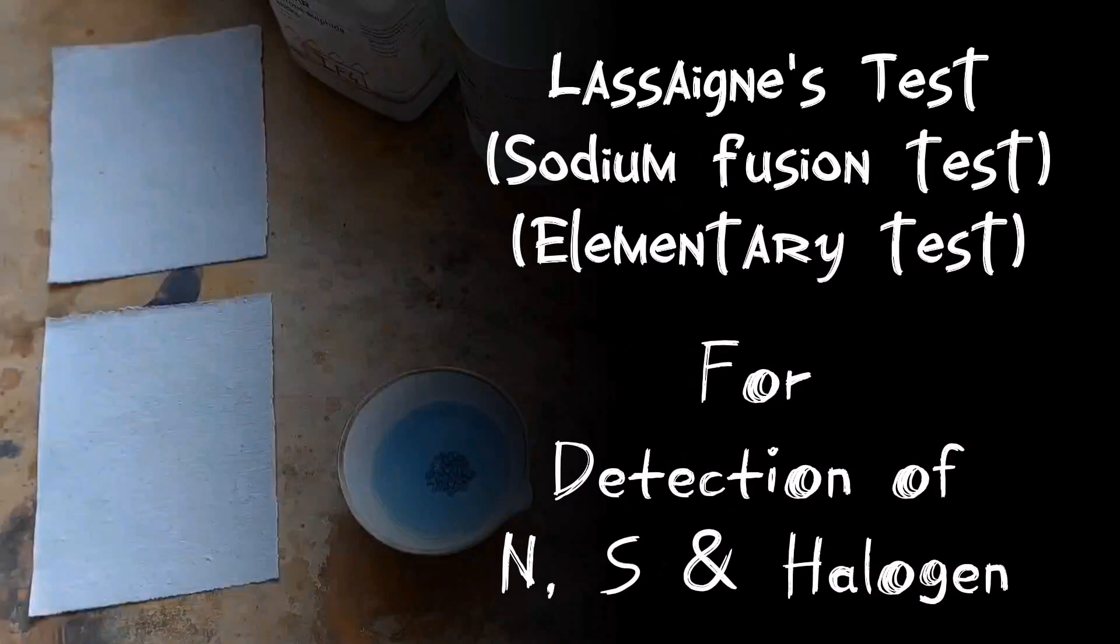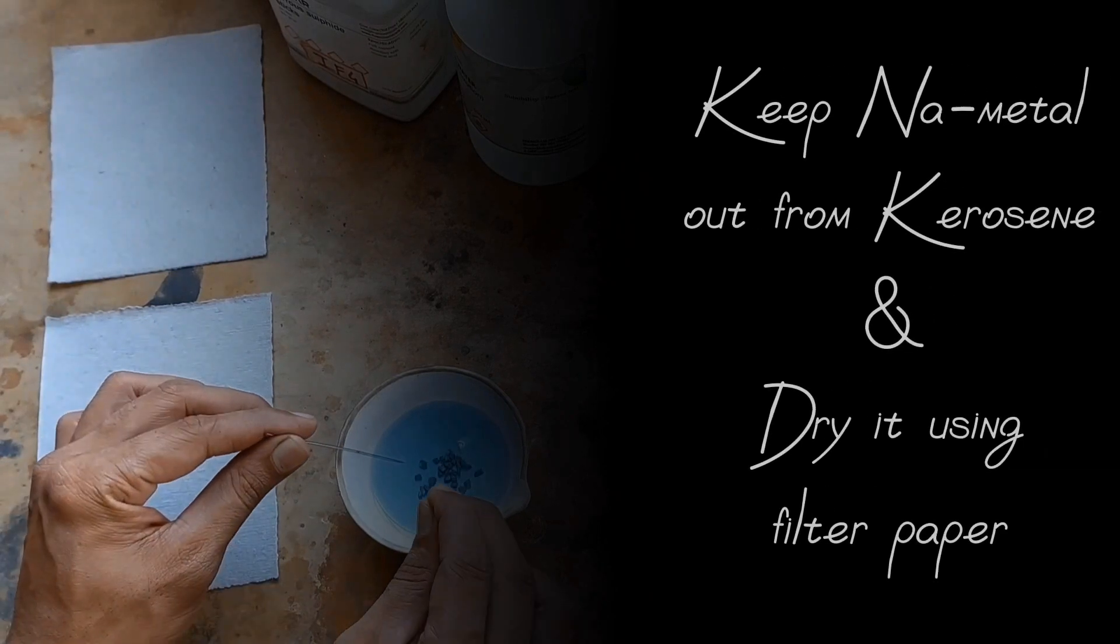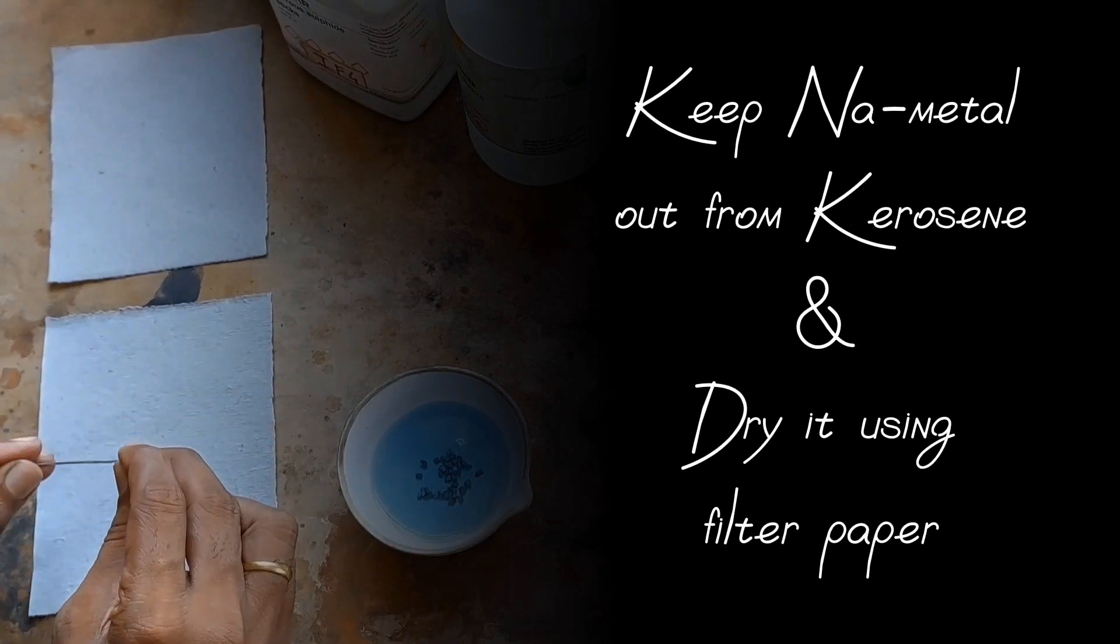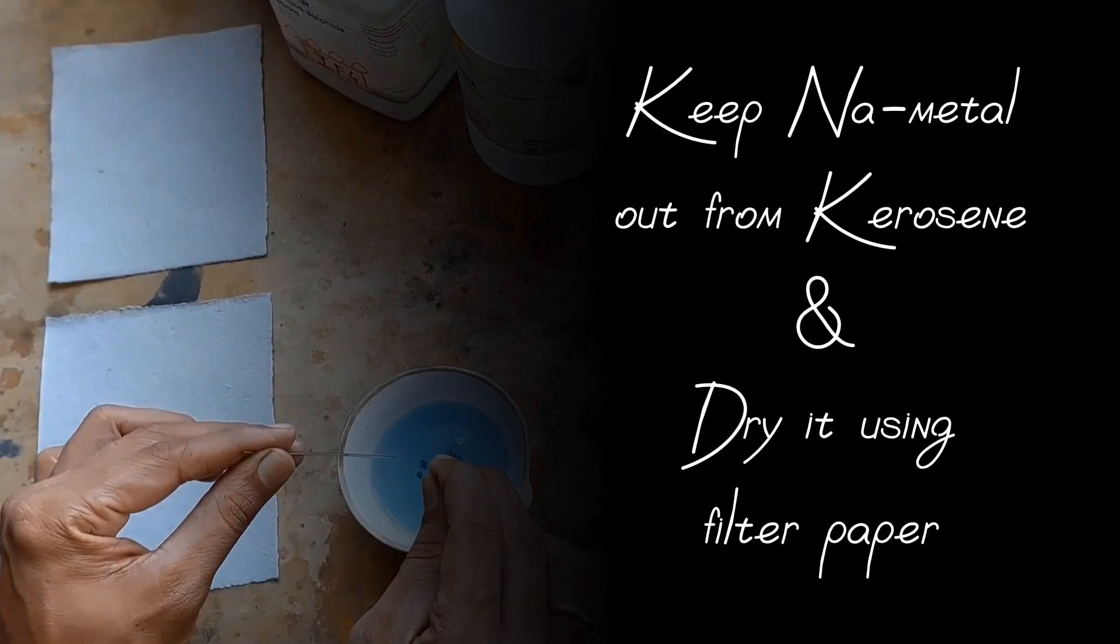Lassaigne's test for detection of Nitrogen, Sulphur and Halogen. Keep sodium metal out from kerosene and dry it using filter paper.